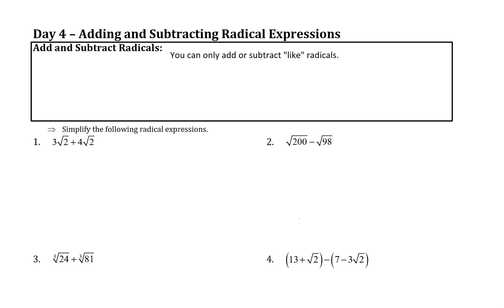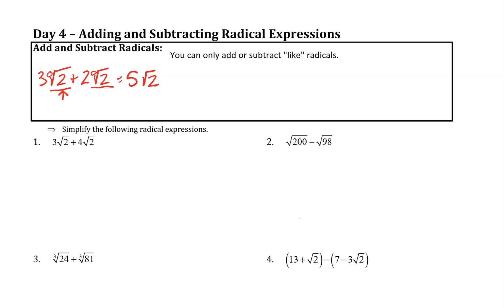The most important thing to know about adding and subtracting radicals: you can only add or subtract like radicals. With radicals, that means something like 3 times the square root of 2 plus 2 times the square root of 2. To be a like radical, it must have the same number inside and the same power of the root. So these are both square roots of 2, so we can combine them: 3 of them plus 2 of them equals 5 square root of 2.